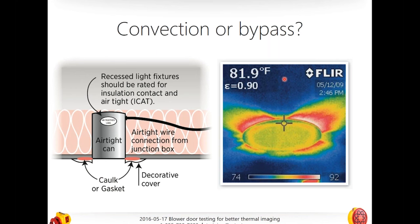Here's a perfect schematic example showing an airtight recessed light can — how it should be sealed with gaskets, a decorative cover over the caulk, and airtight wiring. But this is what happens when it's not sealed. In a cool home, this light penetrates through the ceiling into an attic. By depressurizing the home, we're sucking warm air in from the attic and we can see exactly where it is. That's a bypass.